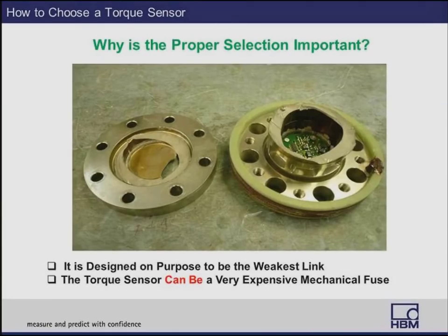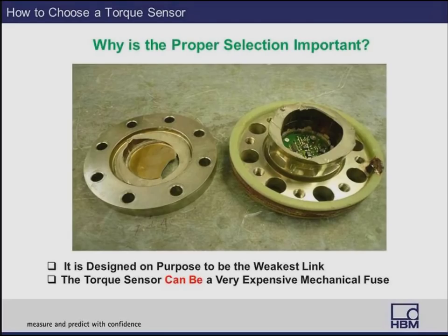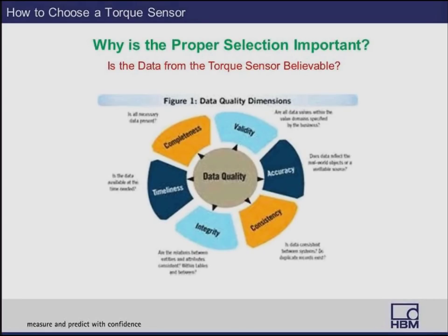Why is the proper selection of a rotating torque sensor important? It is designed on purpose to be the weakest link in the drivetrain. The reason for this is to direct torque to a specific area and place the strain gauges over that area — making the sensing area the weakest link. If something catastrophic happens mechanically, the torque sensor can act as a very expensive mechanical fuse, so proper selection is important to avoid mechanical failure. Also, it's important that the data from the torque sensor is believable and as least uncertain as possible, ensuring all electrical requirements are addressed so you can acquire the best possible torque data.